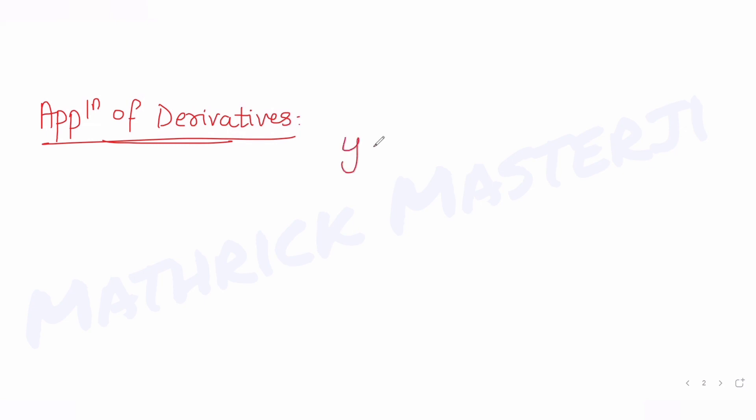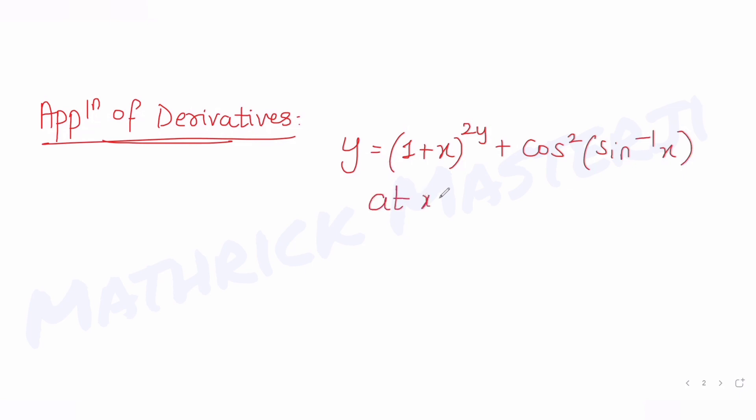Hello guys, I hope you are all doing well. Today's question is from the topic of application of derivatives. The question tells us to find the equation of the normal to the curve, where the curve's equation is y equals (1 + x)^(2y) + cos²(sin⁻¹x). We have been asked to find the equation of the normal at x equals 0.